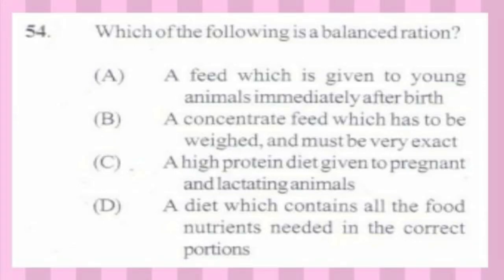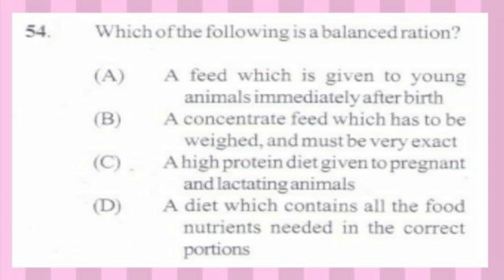Question number 54. Which of the following is a balanced ration? A. A feed given to young animals immediately after birth, B. Concentrate feed which must be weighed and exact, C. A high protein diet given to pregnant and lactating animals, D. A diet which contains all the food nutrients needed in the correct amount. The answer is D, a diet which contains all the food nutrients needed in the correct portions.